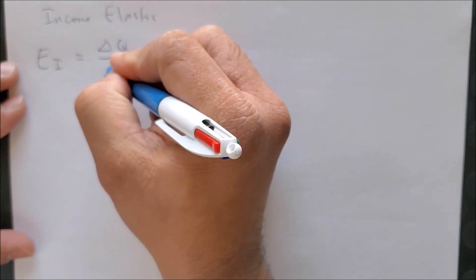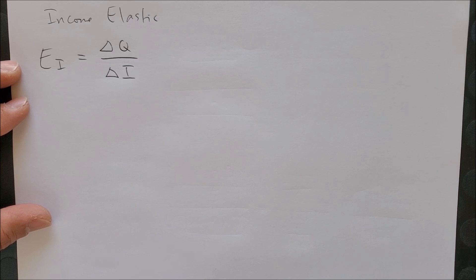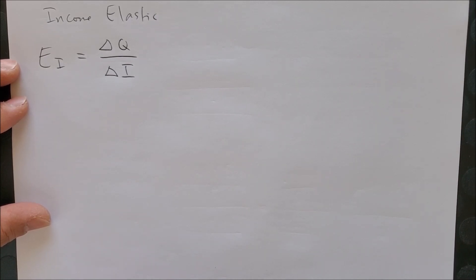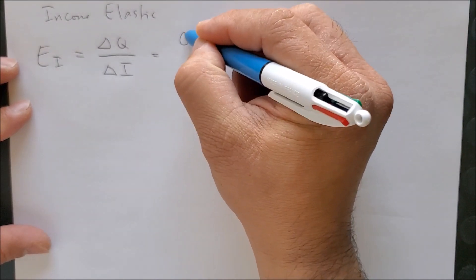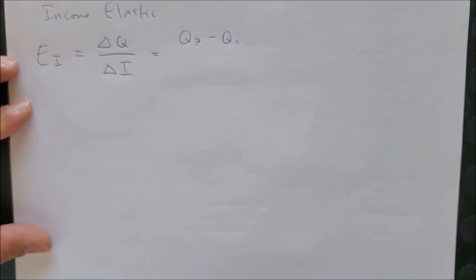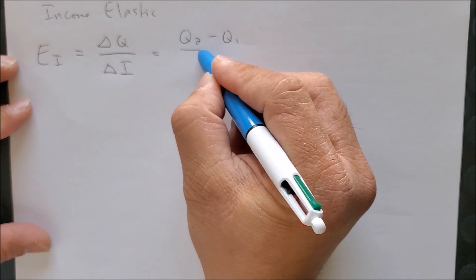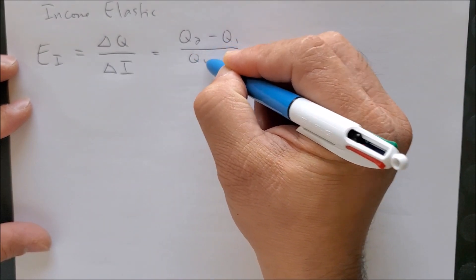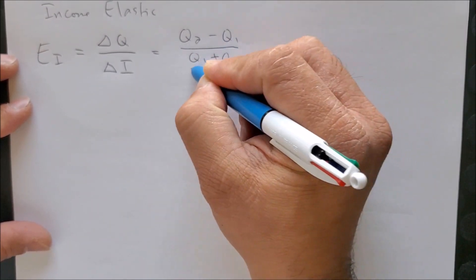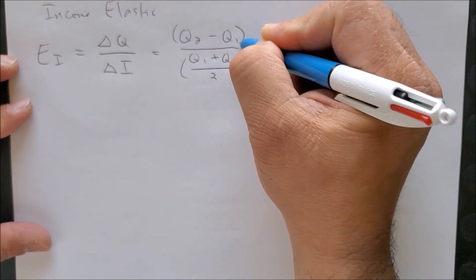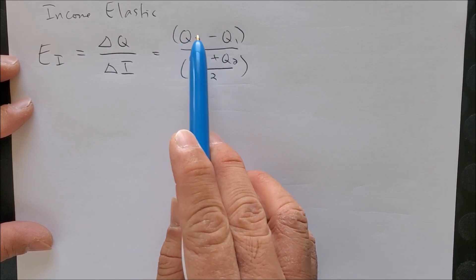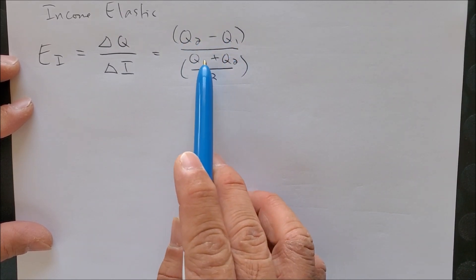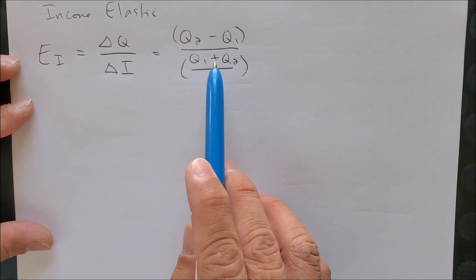We also know that this becomes the change in quantity over the change in income, but using the midpoint equation we can now further expand change of Q into the following: Q2 minus Q1, which we saw, but now we are going to use the midpoint, which would be the average of both quantities over two. Notice that now we have the change in quantity, new minus old, but we're now looking at the midpoint, the average of both quantities, as our denominator.